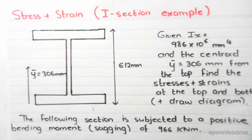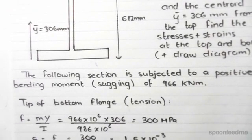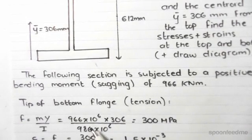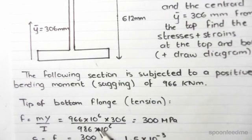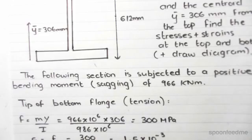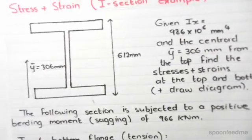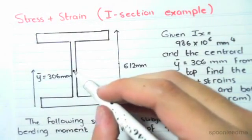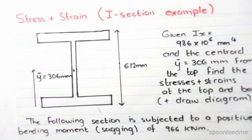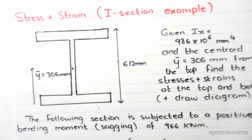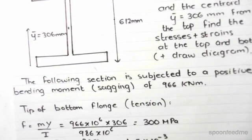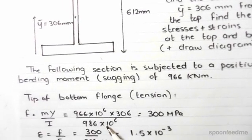So how do we approach such calculations? First, let's work out the tip of the bottom flange. We use f equals my over I. We have a positive bending moment of 966 kilonewton meters, so we convert this to newton millimeters to keep our units consistent by multiplying by 10 to the 6. Then we multiply by Y, and remember Y is the vertical distance from the centroid. Since the centroid is in the center for this symmetrical section, the distance from the centroid to the bottom of the bottom flange is 306 millimeters. Then we divide by the I value, which is given as 986 times 10 to the 6.